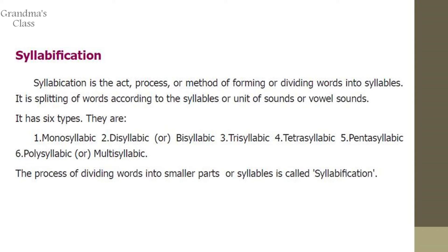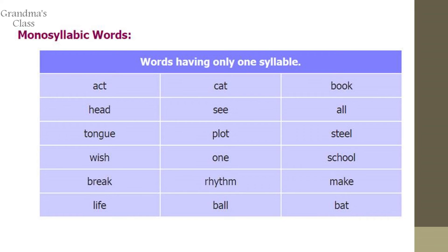Monosyllabic words are words having only one syllable. Examples: act, cat, book, head, see, all, tongue, plot, steal, wish, one, school, break, rhythm, make, life, ball, bat. These all have a single syllable, that is why they are monosyllabic words.